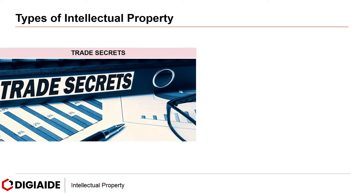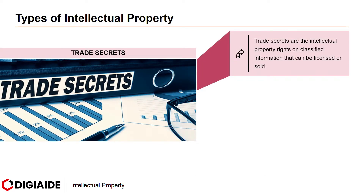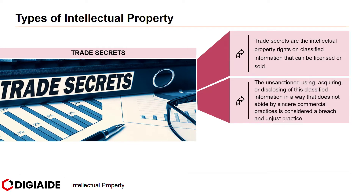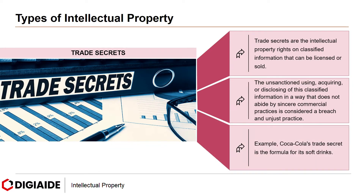Next, Trade Secrets. Trade Secrets are the intellectual property rights on classified information that can be licensed or sold. The unsanctioned using, acquiring or disclosing of this classified information in a way that does not abide by sincere commercial practices is considered a breach and unjust practice. For example, Coca-Cola's Trade Secret is the formula for their soft drink. Formal protection by the government is not granted and companies must protect their trade secrets by themselves.